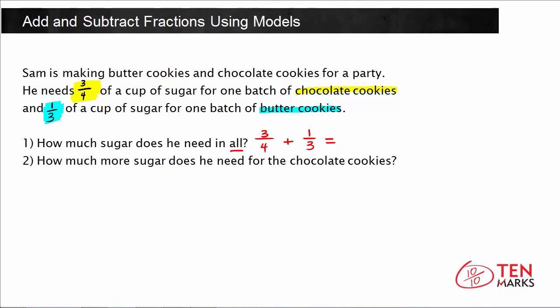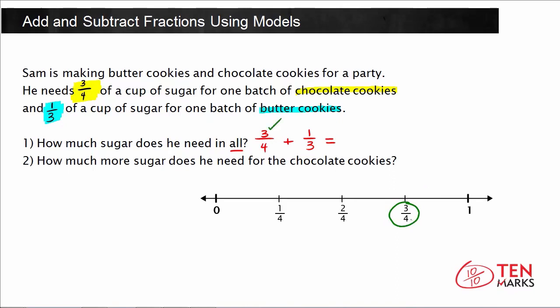Before finding the exact answer, we're going to estimate by figuring out between which two numbers our answer will fall, and we'll use a number line for this. Looking at the number line, the first addend of 3 fourths is marked right on it. Now we need to think about where 1 third falls, and we'll use benchmarks to determine its position.